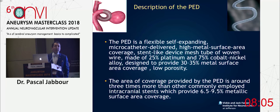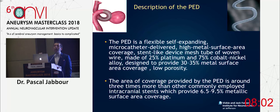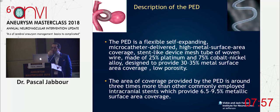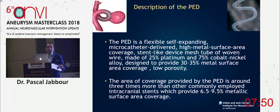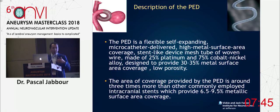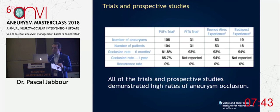The pipeline is practically more metal than we've ever put in a vessel — we've never put so much metal in a vessel. We used to do stent-assisted coiling in the early 2000s; those stents were 6–7% metal coverage. Here we're talking close to 30% metal coverage. This is a totally different game.